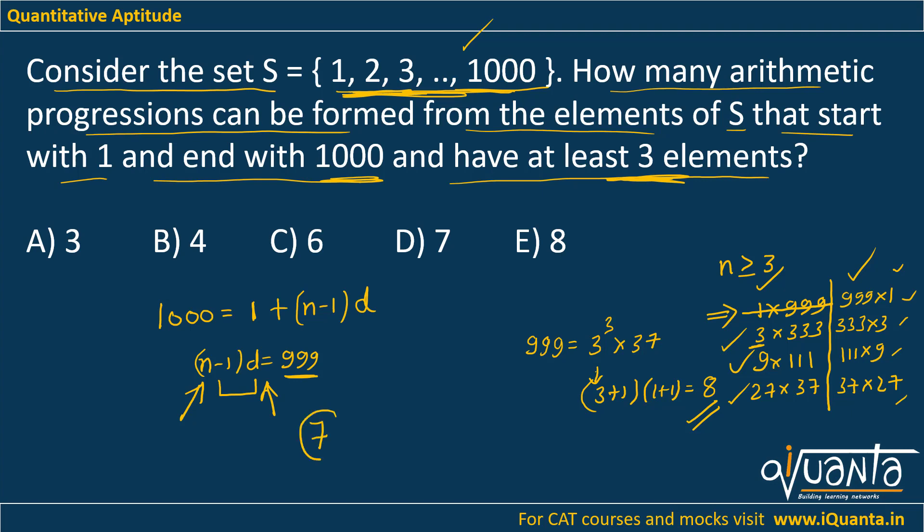So 7 factor pairs will remain in which N will be greater than or equal to 3. Option D will be the correct answer here. So that is how we have to solve this question—we just had to rule out whatever values are not possible.